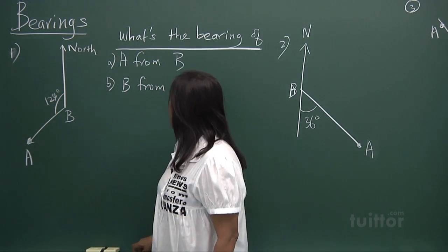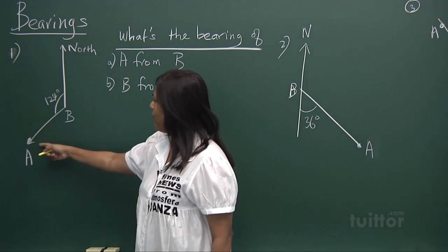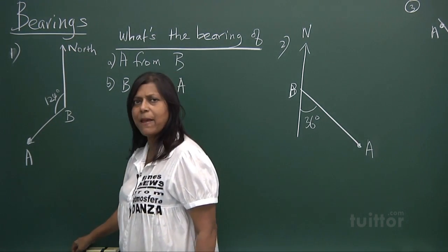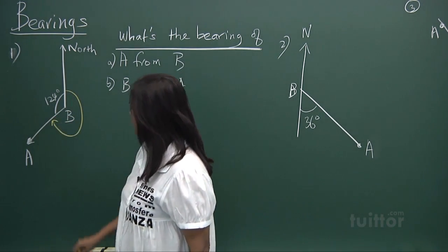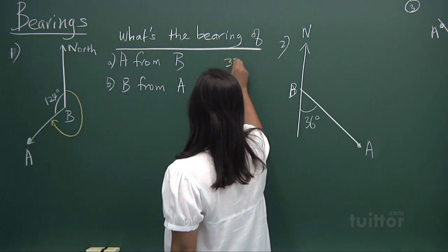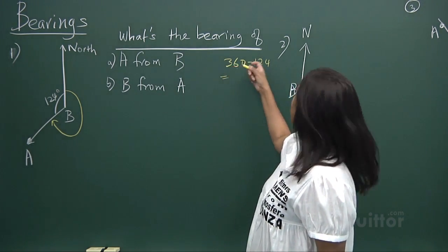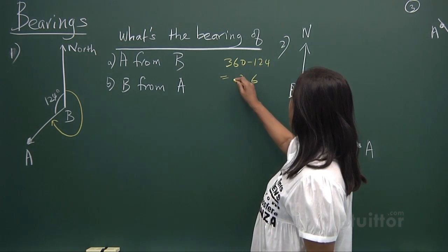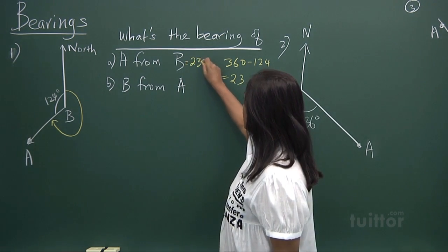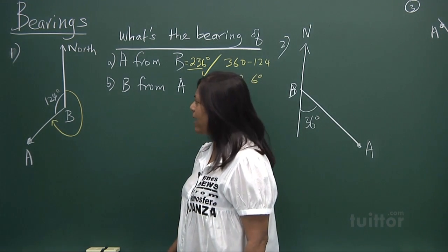What is the bearing of A from B? The starting point is B. From B, look at north — B goes one round here, and that's the bearing from north. So it's 360 degrees minus 124. You calculate: 360 minus 124 gives you 236 degrees. So the bearing of A from B is 236 degrees.